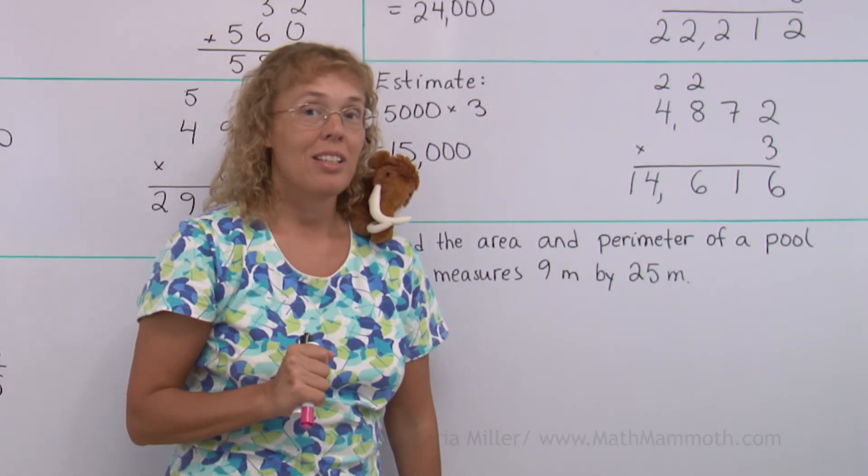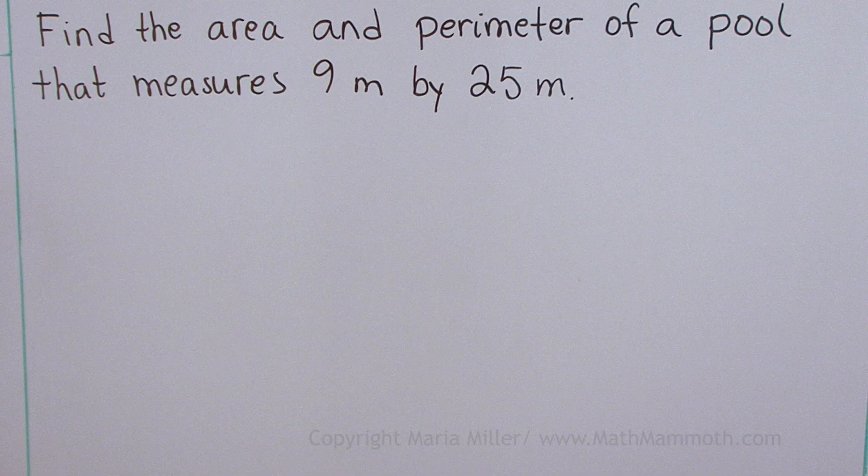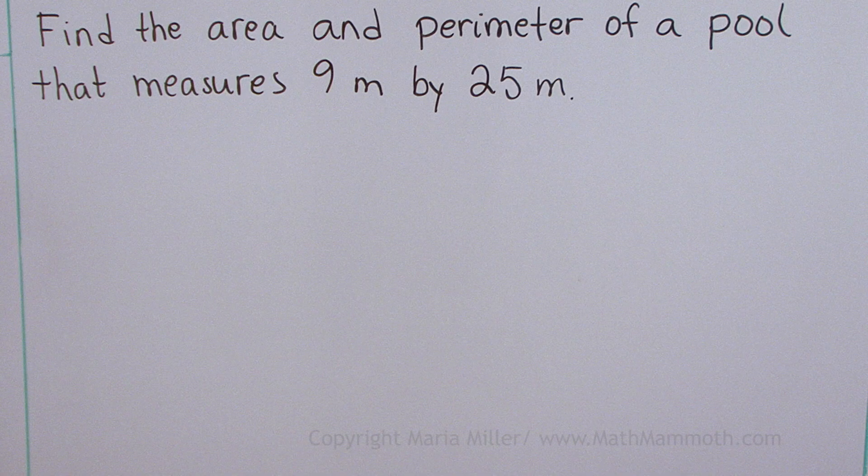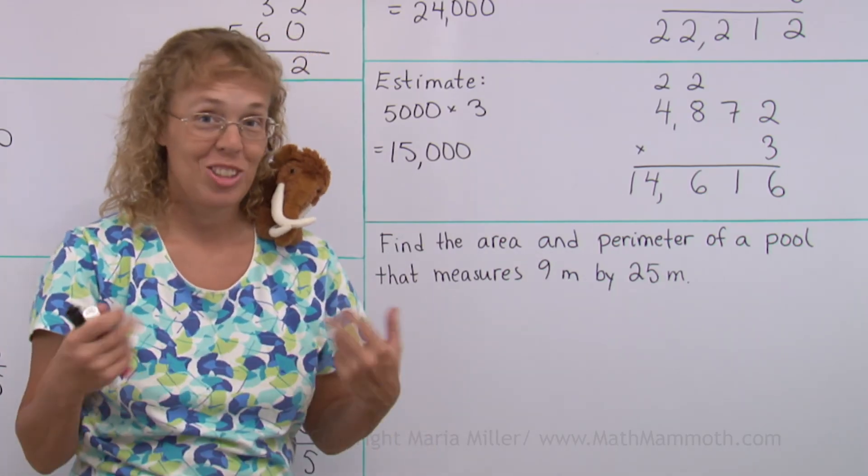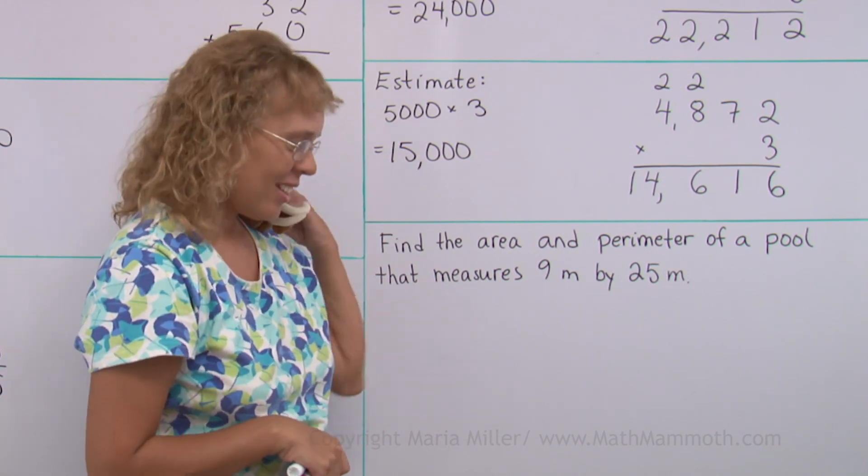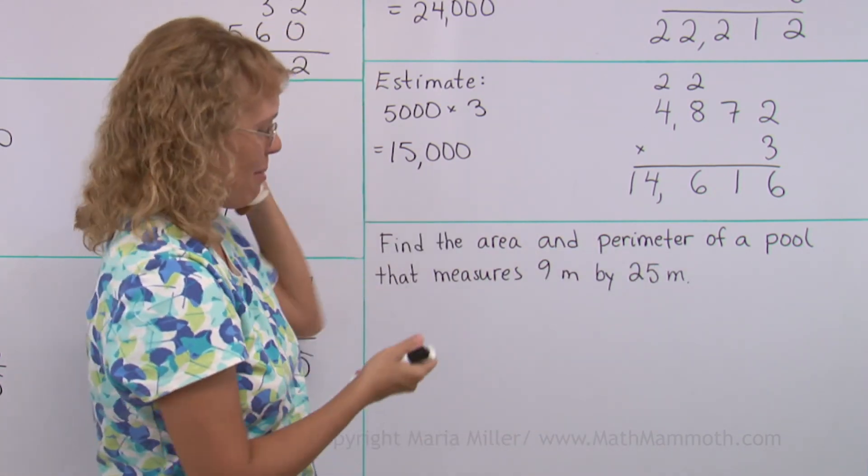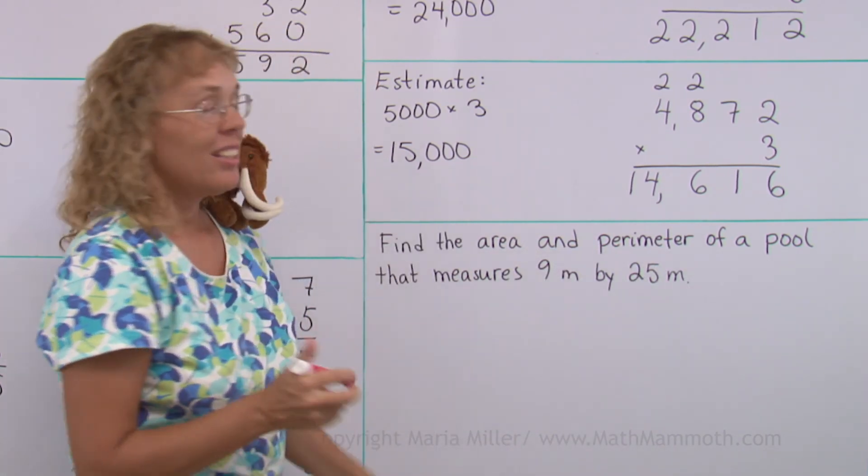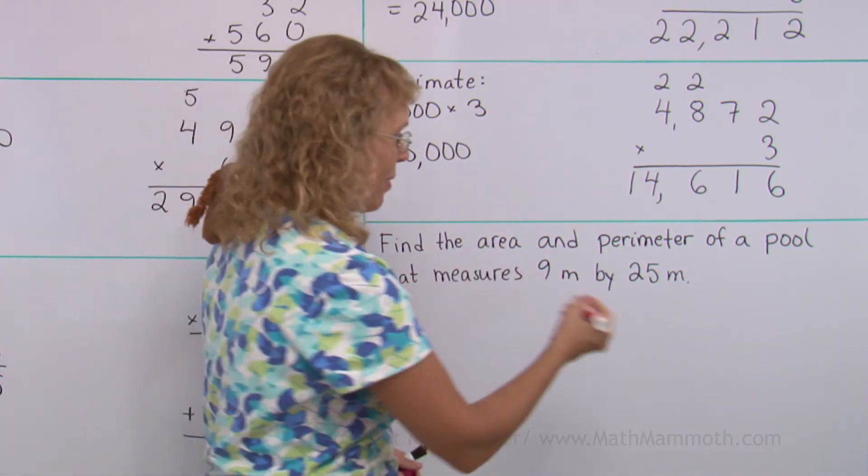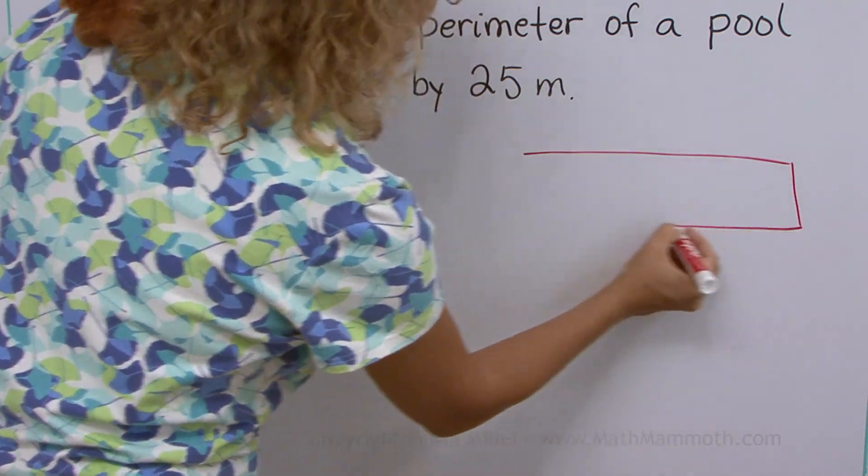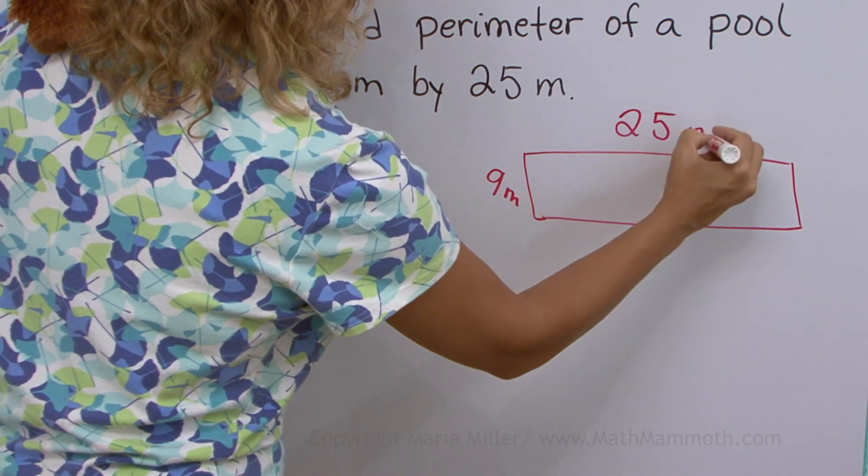Lastly, we get to review something that you should know well. Area and perimeter. Find the area and perimeter of a pool that measures 9 meters by 25 meters. Oh, that makes me feel like jumping in. Don't you think, Mati? Yeah, he wants to jump in too. Come back, come back. Anytime we have a geometry problem, it's good to sketch a picture.